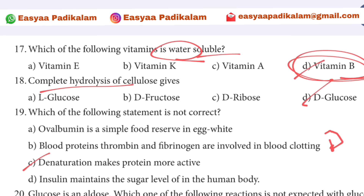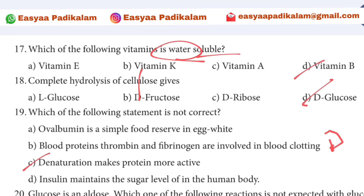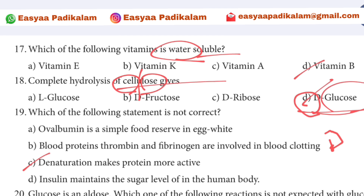18th question: Complete hydrolysis of cellulose gives glucose directly. Cellulose can be understood as a polymer of glucose — so complete hydrolysis of cellulose yields glucose.